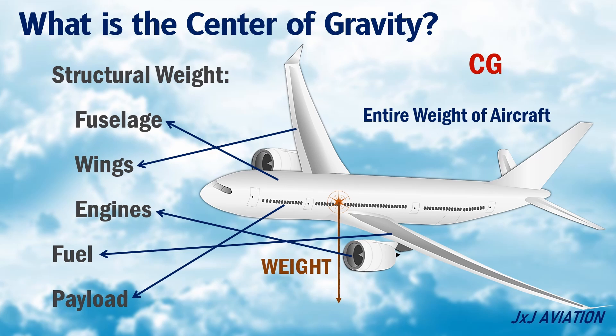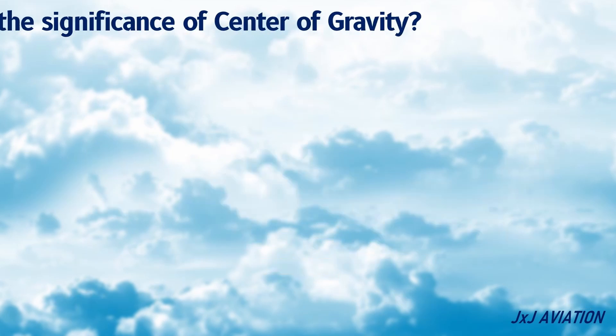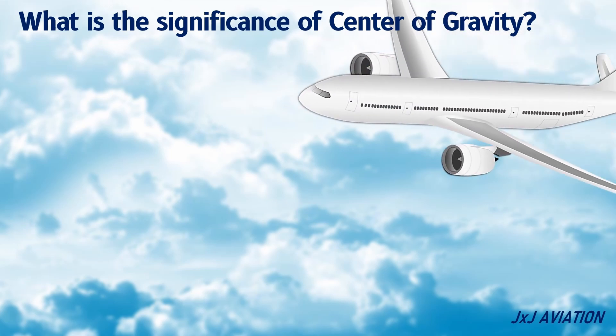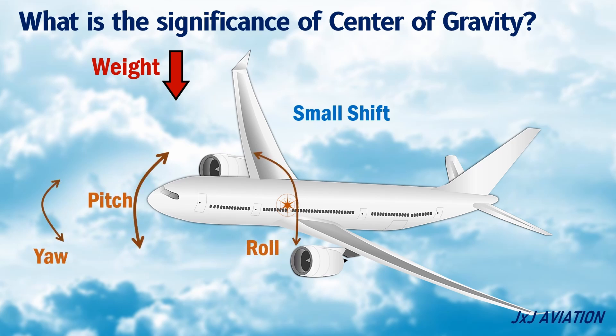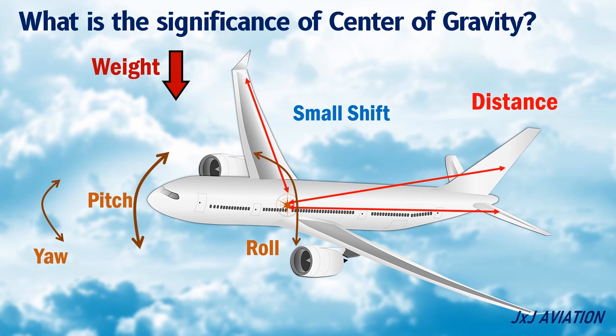When an aircraft is in flight, the total weight reduces because of the consumption of fuel and oil. Although the weight of an aircraft reduces in flight, there is only a small shift in the center of gravity. The CG is important because the pitch, roll, and yaw moments occur about this point. This means that the distance of the primary control surfaces from the center of gravity has a big influence on the moments that are created on an aircraft.